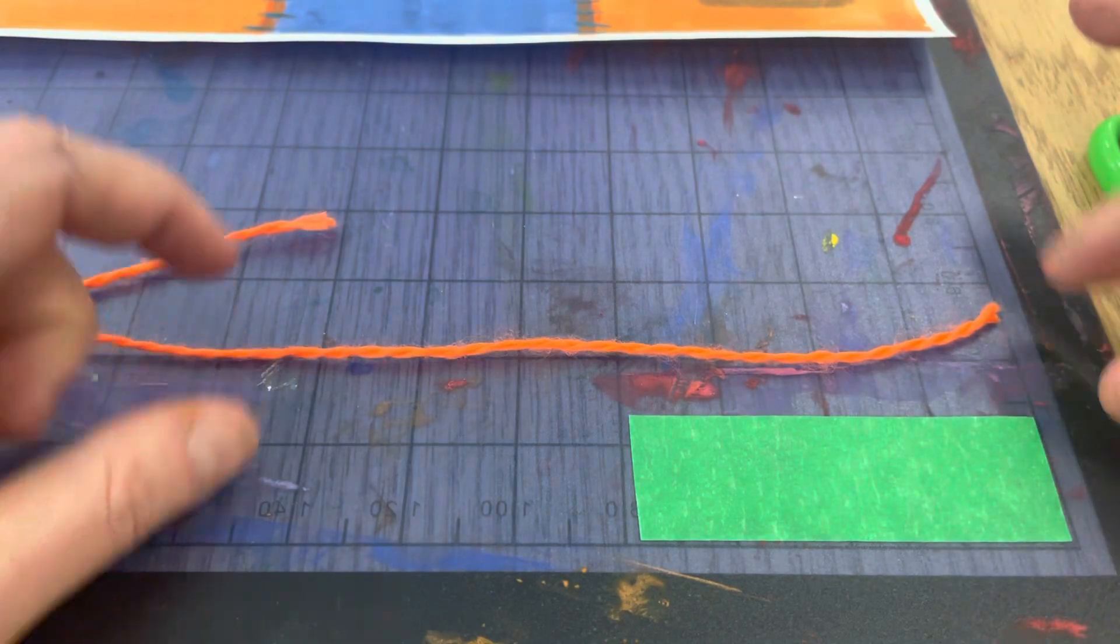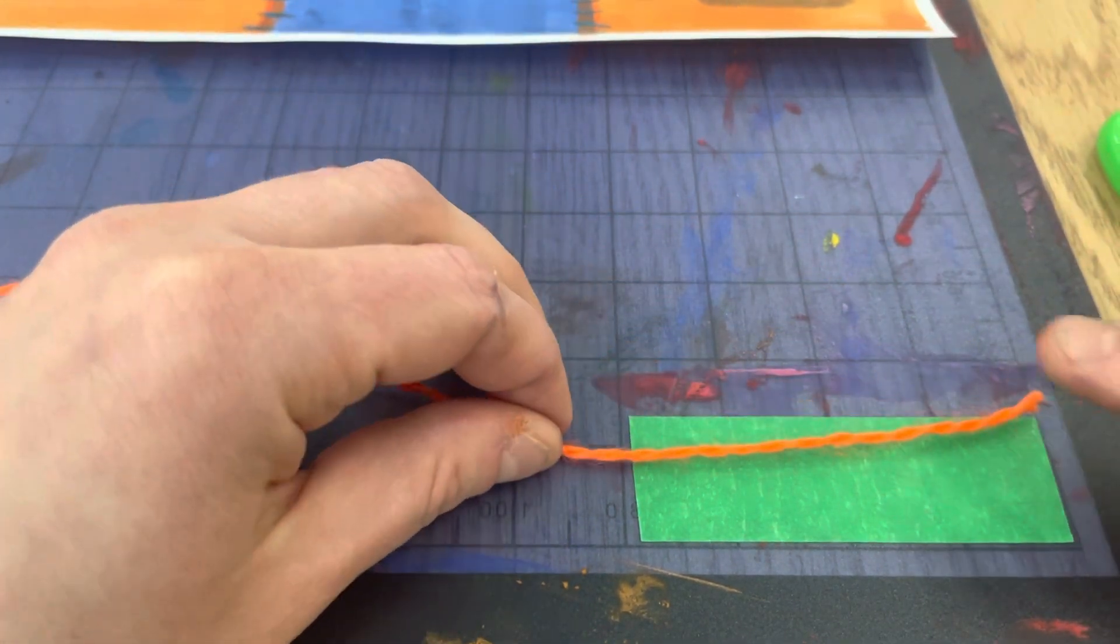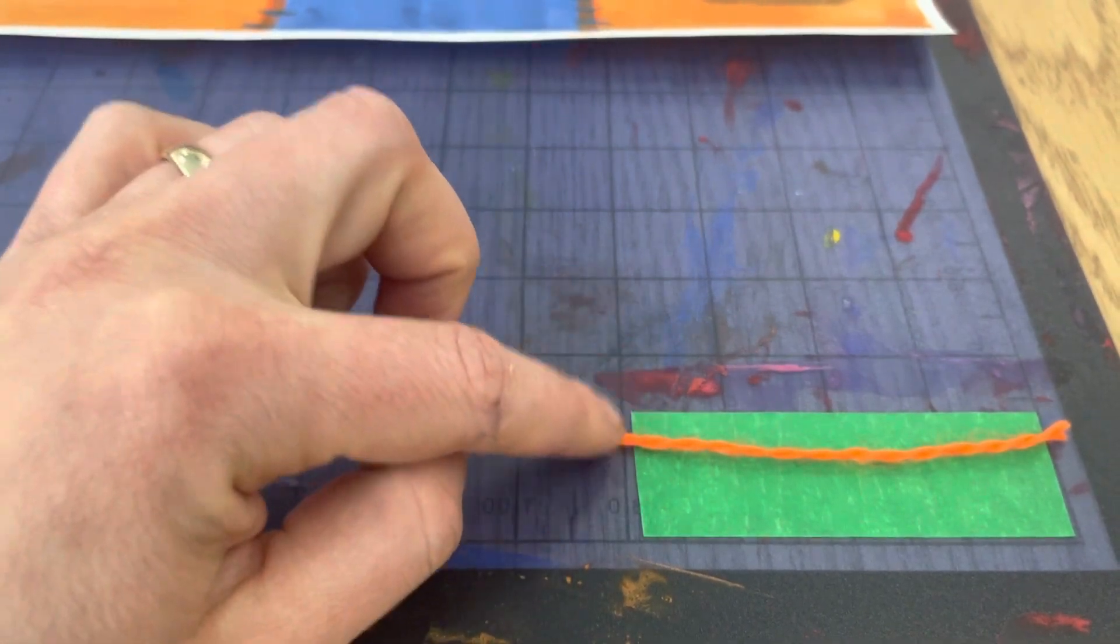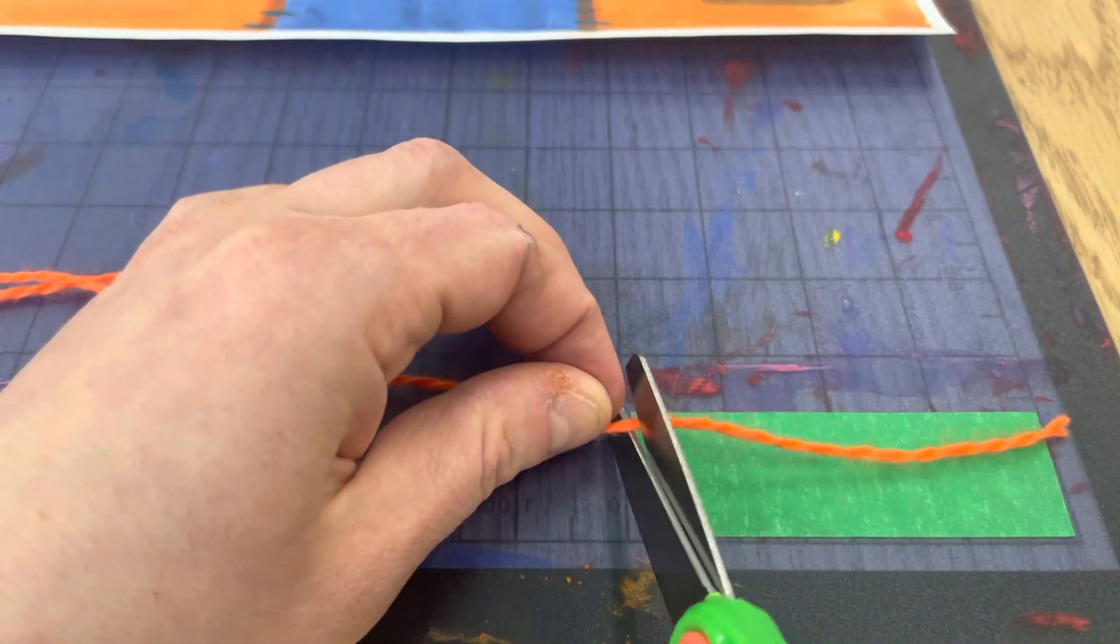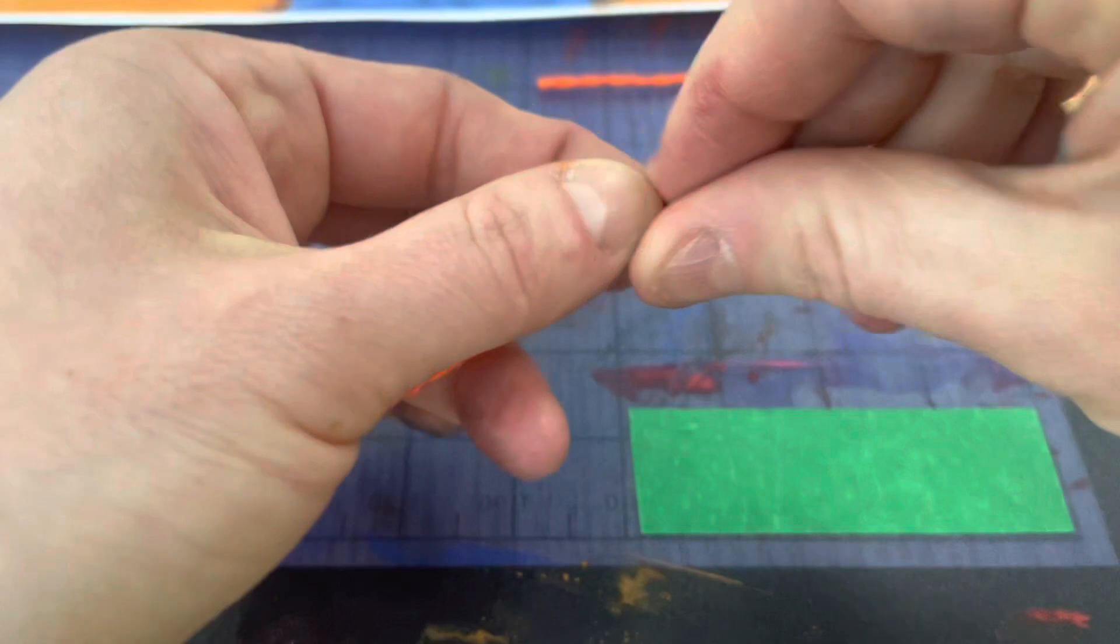And this green piece of tape is going to be your measuring tape, so you're going to line it up with the edge of your tape over here, and then you're going to snip it right here at the edge of this tape so it's about three inches long like that. Then you're going to create a little pile.